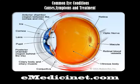Cornea: the clear front window of the eye that transmits and focuses light into the eye. Iris: the colored part of the eye that helps regulate the amount of light that enters. Pupil: the dark aperture in the iris that allows light to pass through into the back of the eye. Lens: the transparent structure inside the eye that focuses light rays onto the retina.